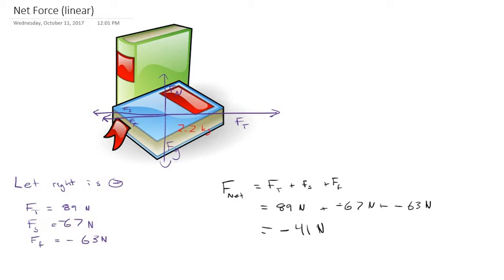Now we also were asked to calculate the acceleration of the textbook. For most of our problems related to this, we're going to be using this formula F equals ma. We know the net force, so now we're going to use the net force acting on this object, which is negative 41 newtons, equals the mass of this textbook, which is 2.2 kilograms, times the acceleration.